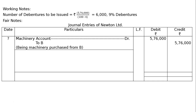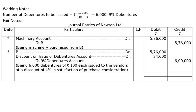Next entry: B account is debited ₹5,76,000. Discount on issue of debentures account is debited — that is 6,000 debentures at the rate of ₹4 per debenture discount — and 9% debentures account is credited with ₹6,24,000. Being 6,000 debentures of ₹100 each issued to the vendors at a discount of 4% in satisfaction of the purchase consideration.